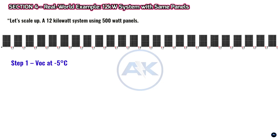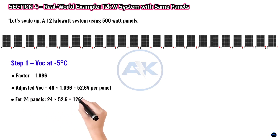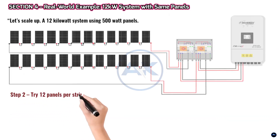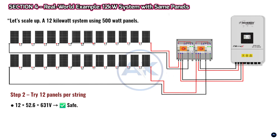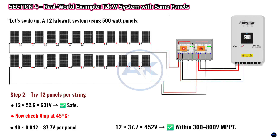Step 1 — VOC at −5°C: factor = 1.096. Adjusted VOC = 48 × 1.096 = 52.6 V per panel. For all 24 panels: 24 × 52.6 = 1262 V — too high, exceeding the inverter's 1000 V limit. Try 12 panels per string: 12 × 52.6 = 631 V — safe. Step 2 — VMP at 45°C: 40 × 0.942 = 37.7 V per panel; 12 × 37.7 = 452 V, within the 300–800 V MPPT range. Conclusion: the solution is two strings of 12 panels in parallel.